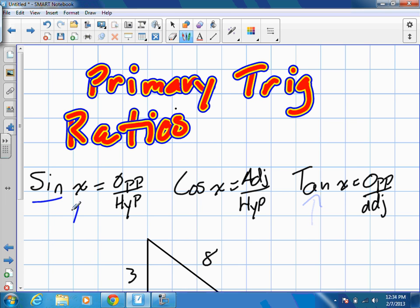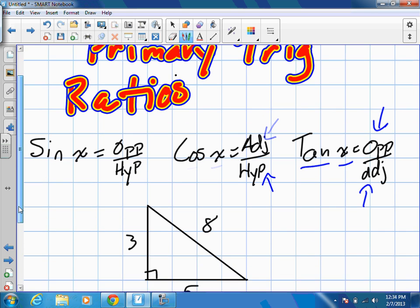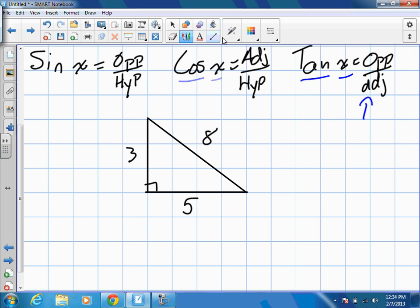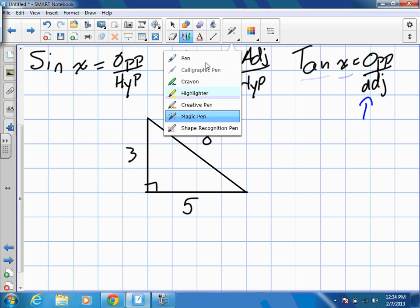So sine of the angle X is equal to the opposite side of the triangle divided by the hypotenuse. Cosine X is the adjacent side divided by the hypotenuse. And tangent of the angle is opposite divided by adjacent, so SOHCAHTOA. I'll write it on the side in case you guys don't remember, right underneath.